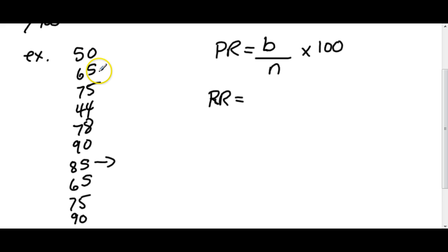50 is 1, 65 is 2, 75 is 3, 44 is 4, 78 is 5, 65 is 6, 75 is 7. So there were 7 scores below this grade of 85.